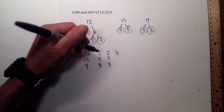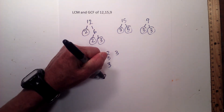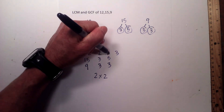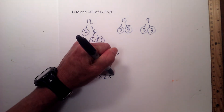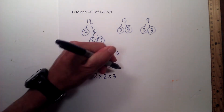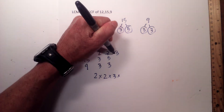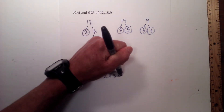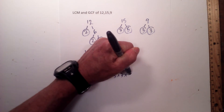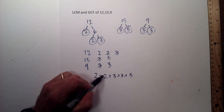So I will go 2 times 2 times 3 — but notice 3 is in all three numbers, so only multiply it once. Let me cross this out, this out, this out, this out — times 3 times 5.